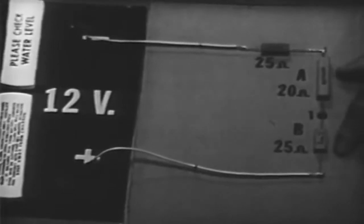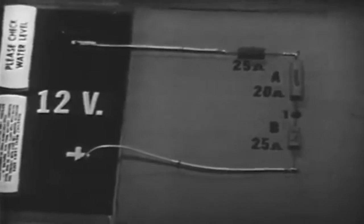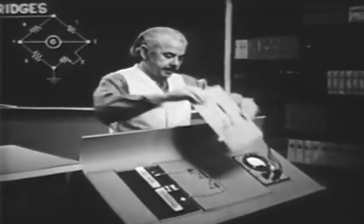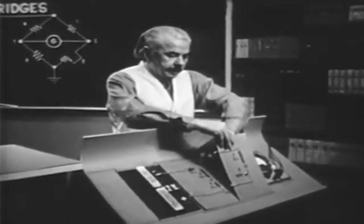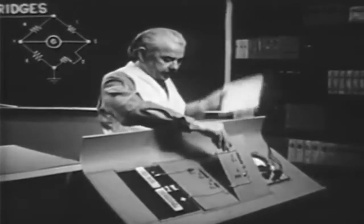You already know that a series circuit is a voltage divider. The voltage is distributed according to the ohmic value of the resistors. Now I'm going to take a similar series circuit and connect it in parallel with this one.